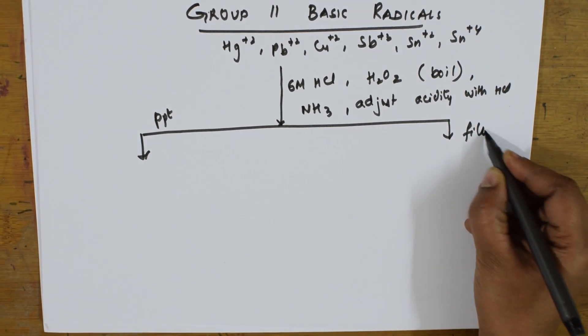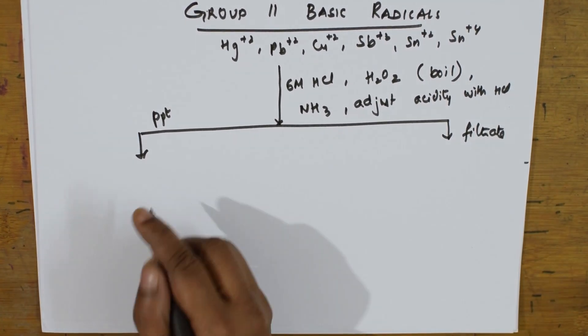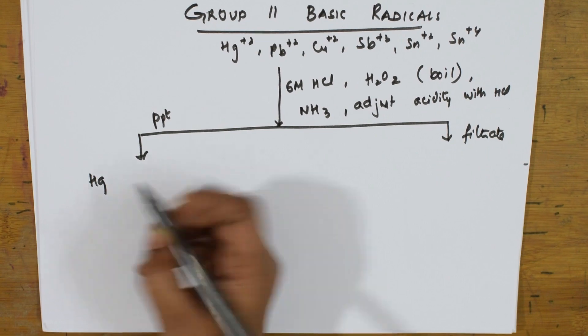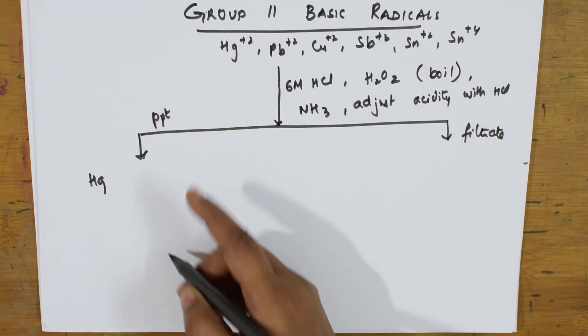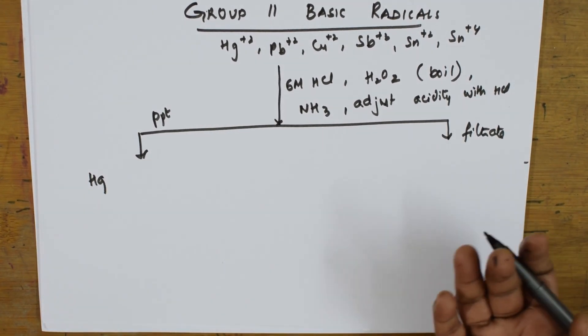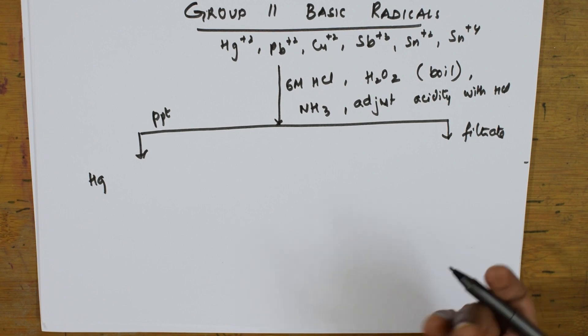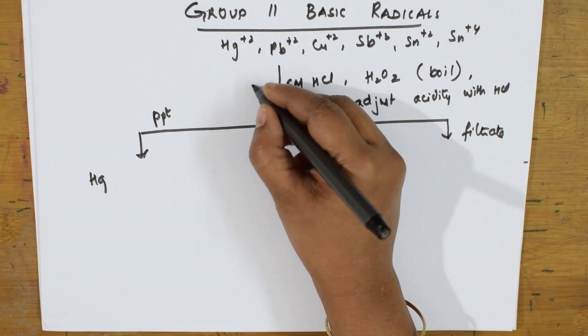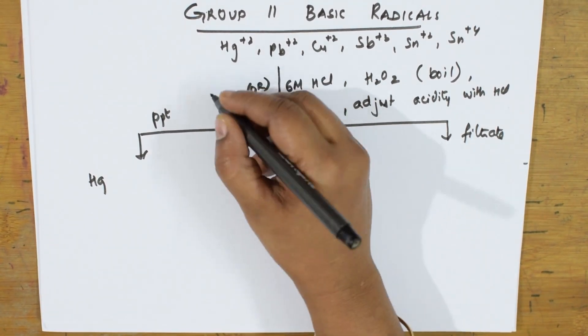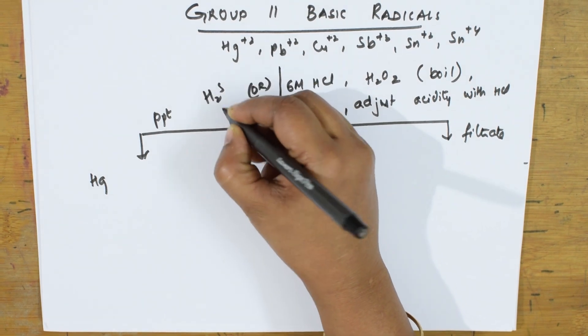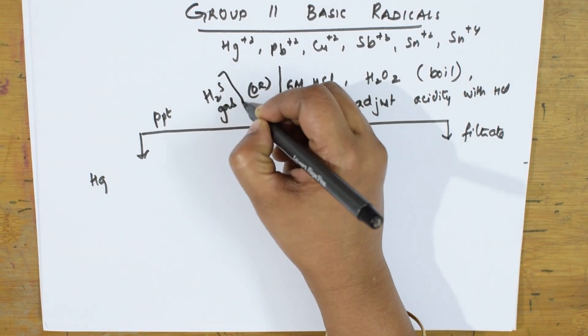The precipitate which I get is, they will be precipitating in the form of sulfides. Because in some of the things, you can also take dilute HCl and H₂S gas also. There is also an option you can take. H₂S is a group reaction.